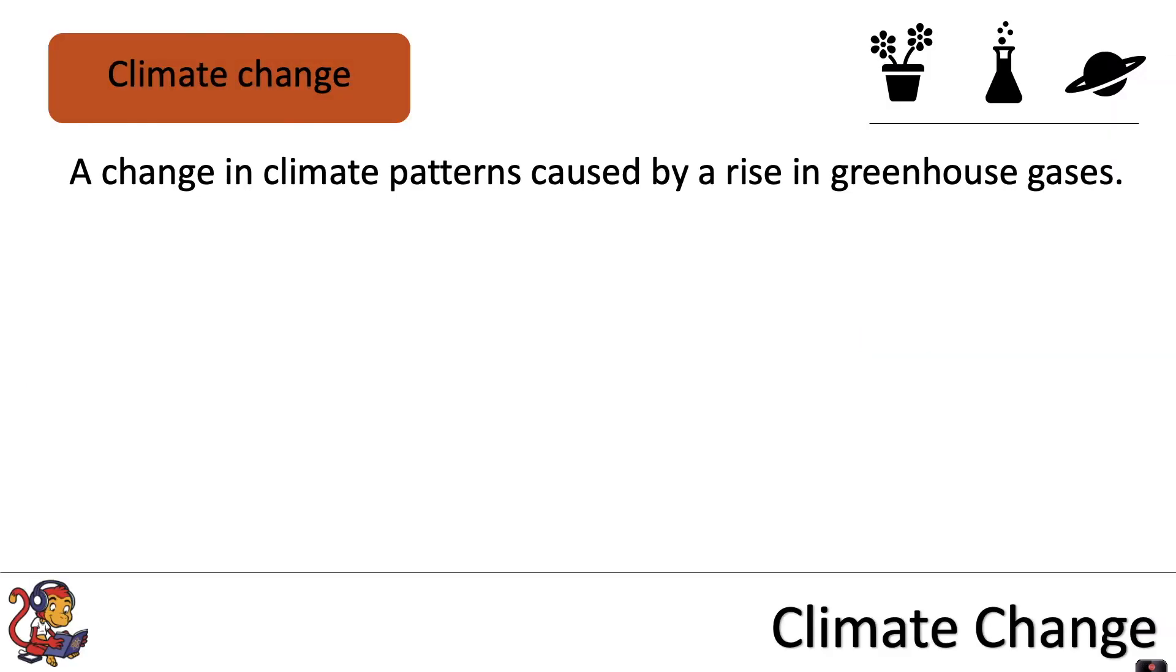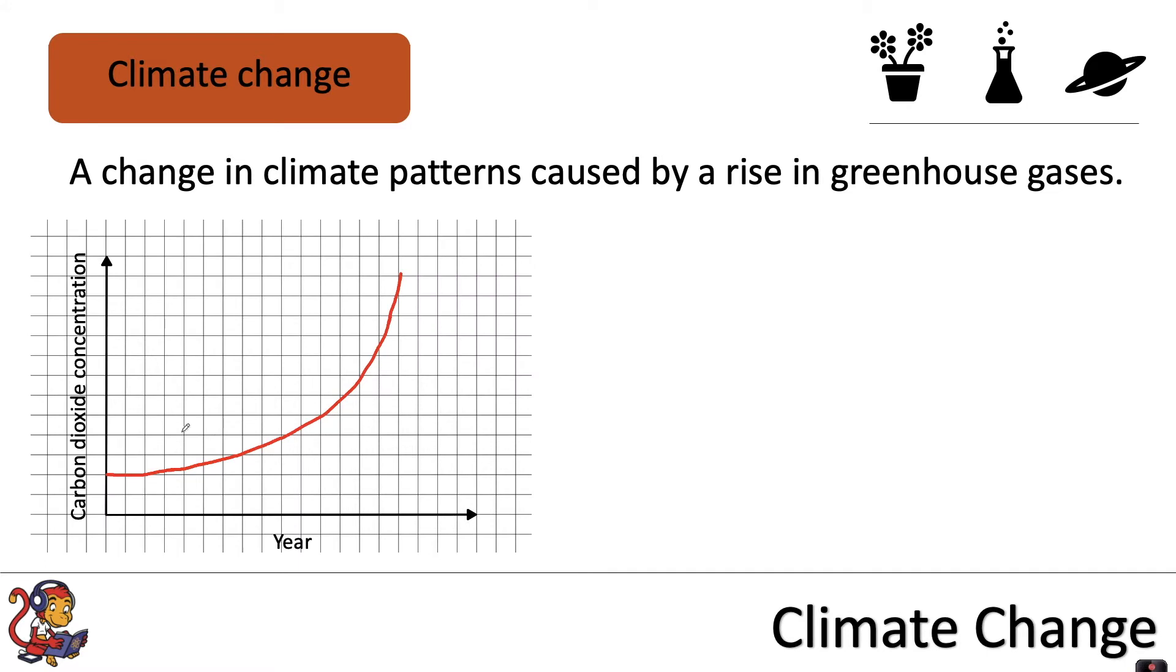Climate change is a change in climate patterns caused by a rise in greenhouse gases. One of the main greenhouse gases is carbon dioxide, and this is a sketch graph to show how carbon dioxide concentration in our Earth's atmosphere has increased over time. After around 1800, we saw a gradual and then rapid increase in carbon dioxide concentration.